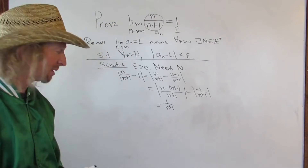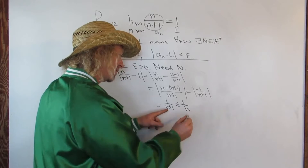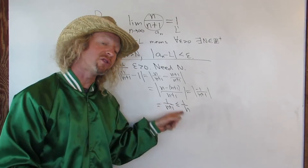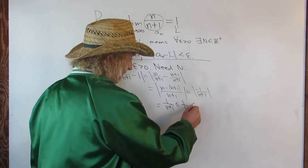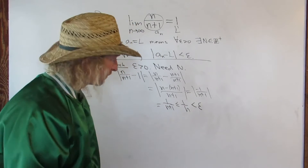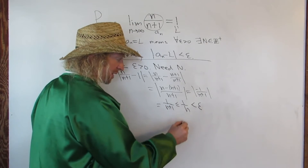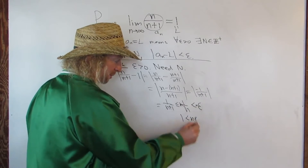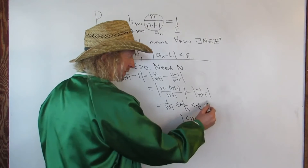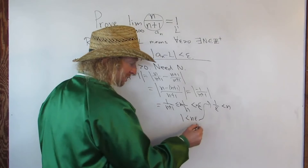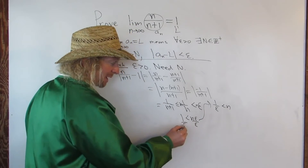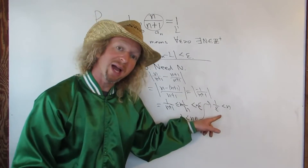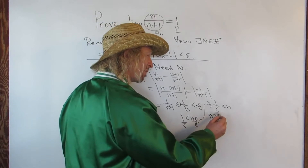We want this to be less than epsilon. Well, 1 over n plus 1 is less than or equal to 1 over n, because n plus 1 is bigger than n so this fraction is smaller. And we want 1 over n to be less than epsilon. So we can solve for n: multiply both sides by n to get 1 less than n times epsilon, then divide by epsilon to get 1 over epsilon less than n. So n greater than 1 over epsilon.